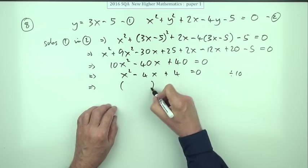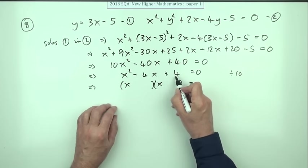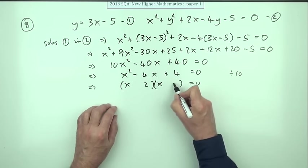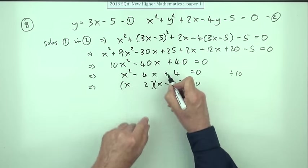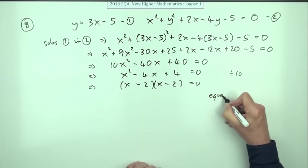Factorize it. Must be the same number to multiply to get 4 and add to get 4. That's 2 and 2. And that says that's negative, that says they're both negative. And there you are, equal roots.